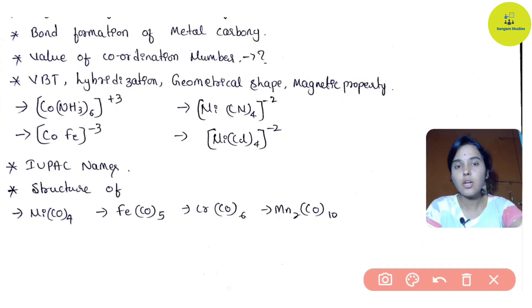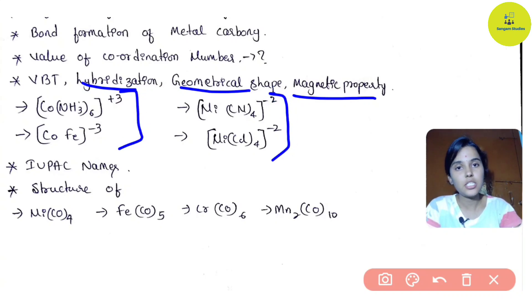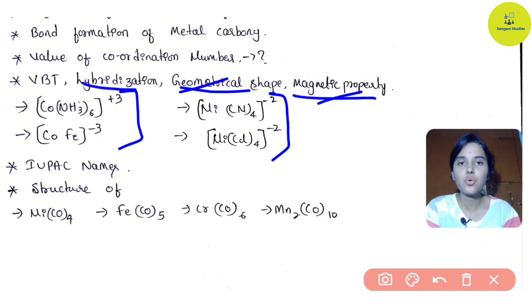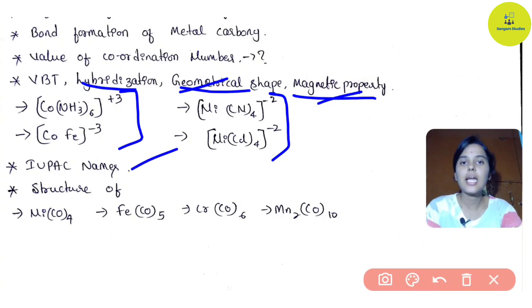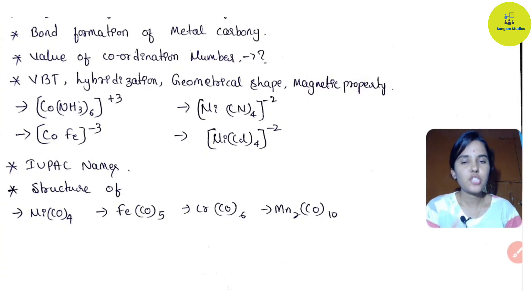One very very important topic is based on Valence Bond Theory (VBT): hybridization, geometrical shape, and magnetic property of coordination compounds. This is a fixed question - it appears in final board exams as a fixed question and in the second test as well. If VBT is in your syllabus, definitely prepare it. Also practice IUPAC names and given four components, write their structure - these are two most important topics in the Coordination Compounds chapter.